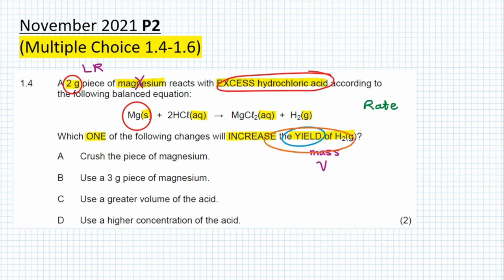If we would like to produce more hydrogen gas then we know we need more magnesium solid. Option A says crush the piece of magnesium. If we crush the magnesium, we are increasing the surface area which will increase the reaction rate but it will not increase the amount of hydrogen gas produced.